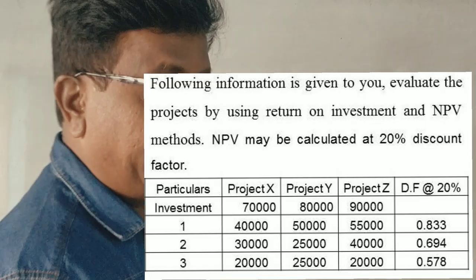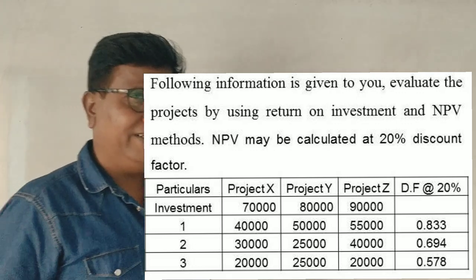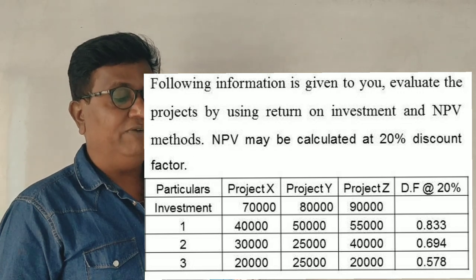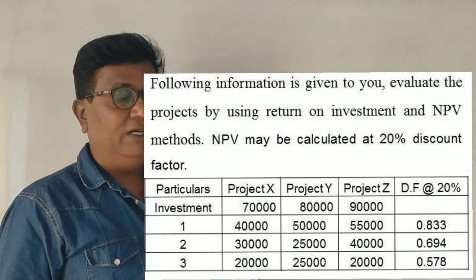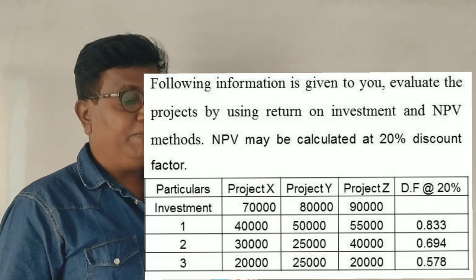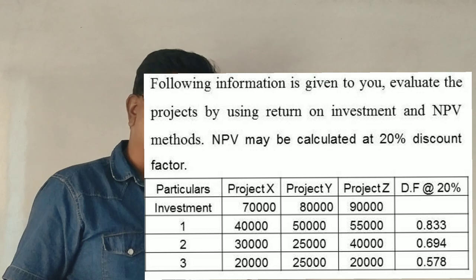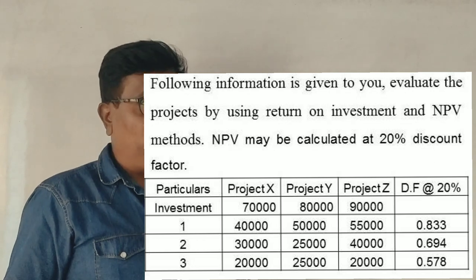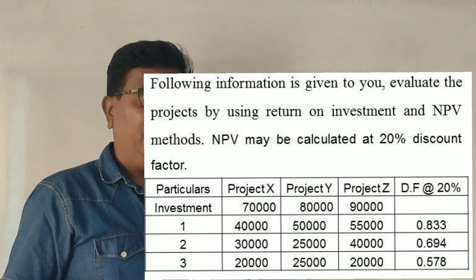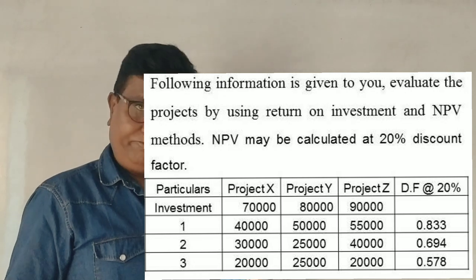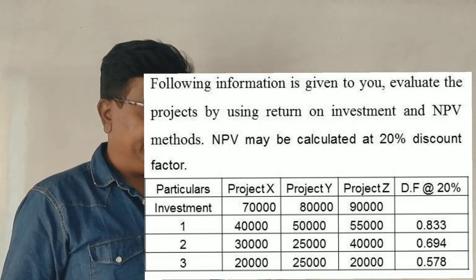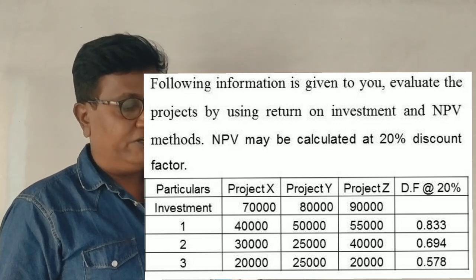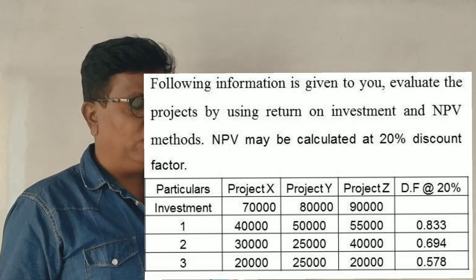Students, financial management. In this one problem, it is interesting — this is the 2018 question. The following information is given to you: evaluate the project by using return on investment and net present value. Average rate of return, return on investment formula. We have project X, project Y, project Z with discount factor at 20% and net cash inflows for years 1, 2, and 3.